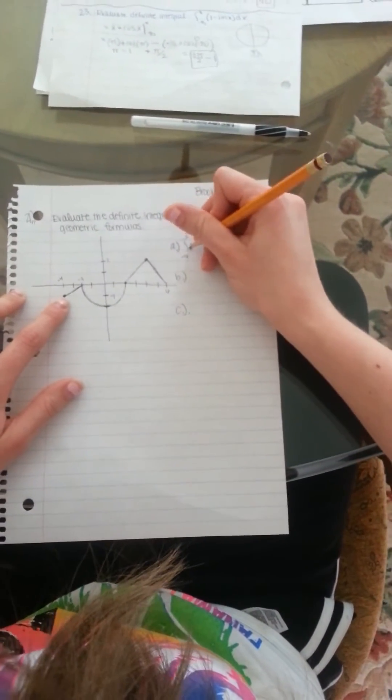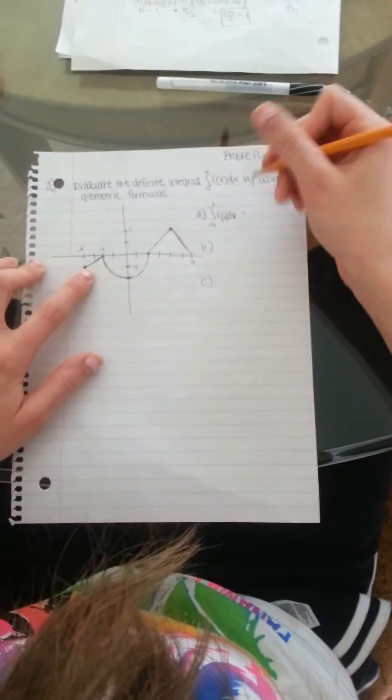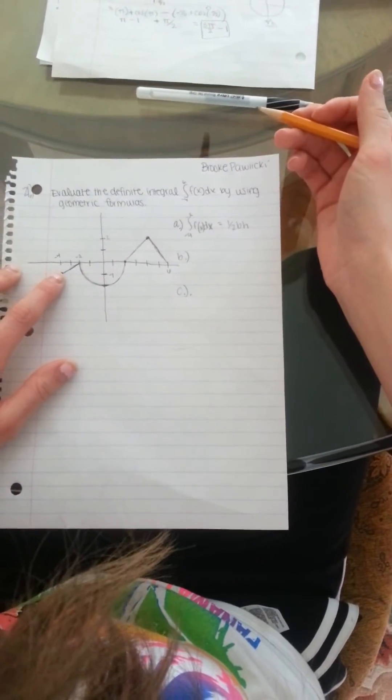The integral from negative 4 to negative 2 of f of x dx is going to be 1 half times base times height because that's the area of the triangle.